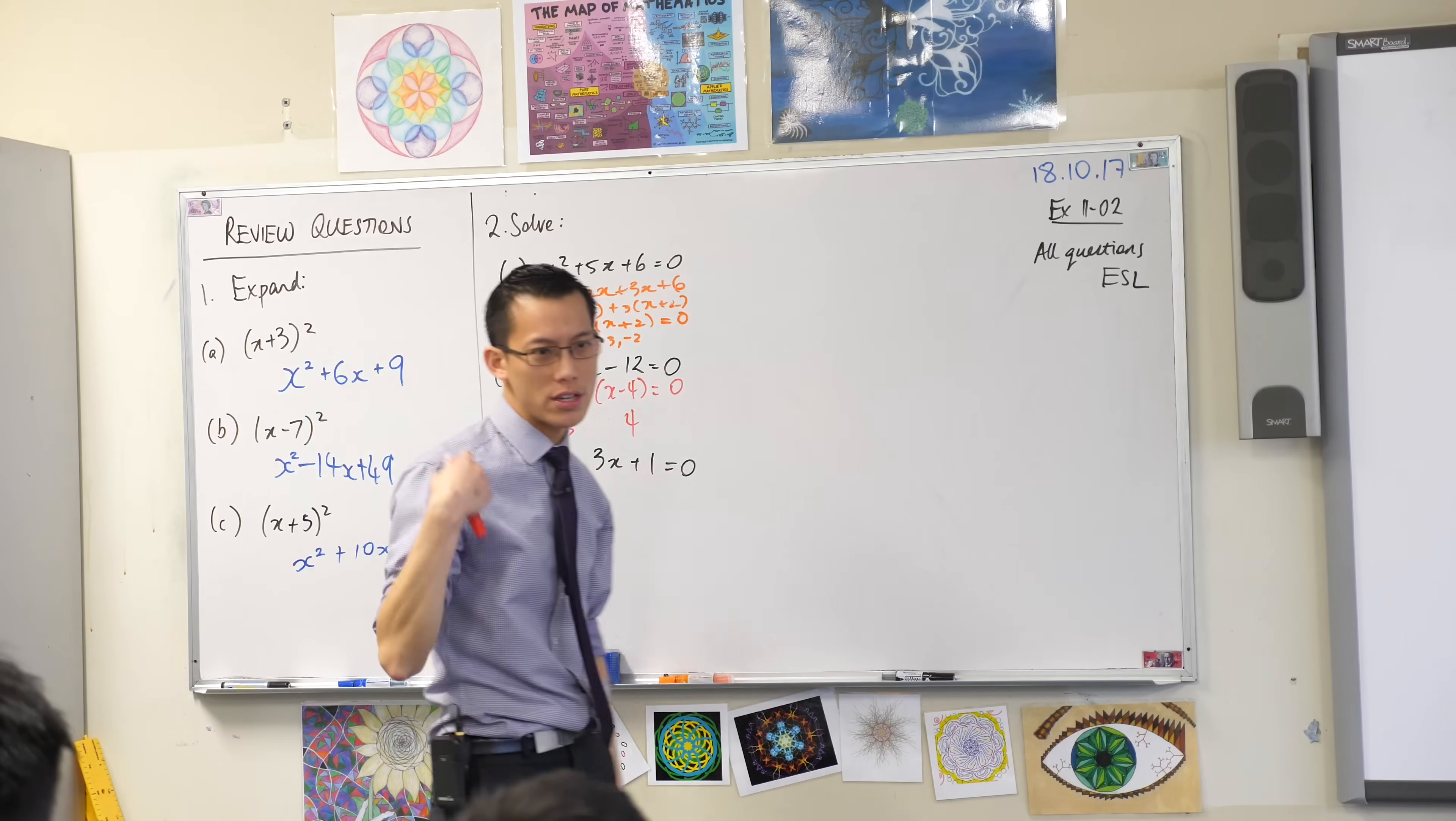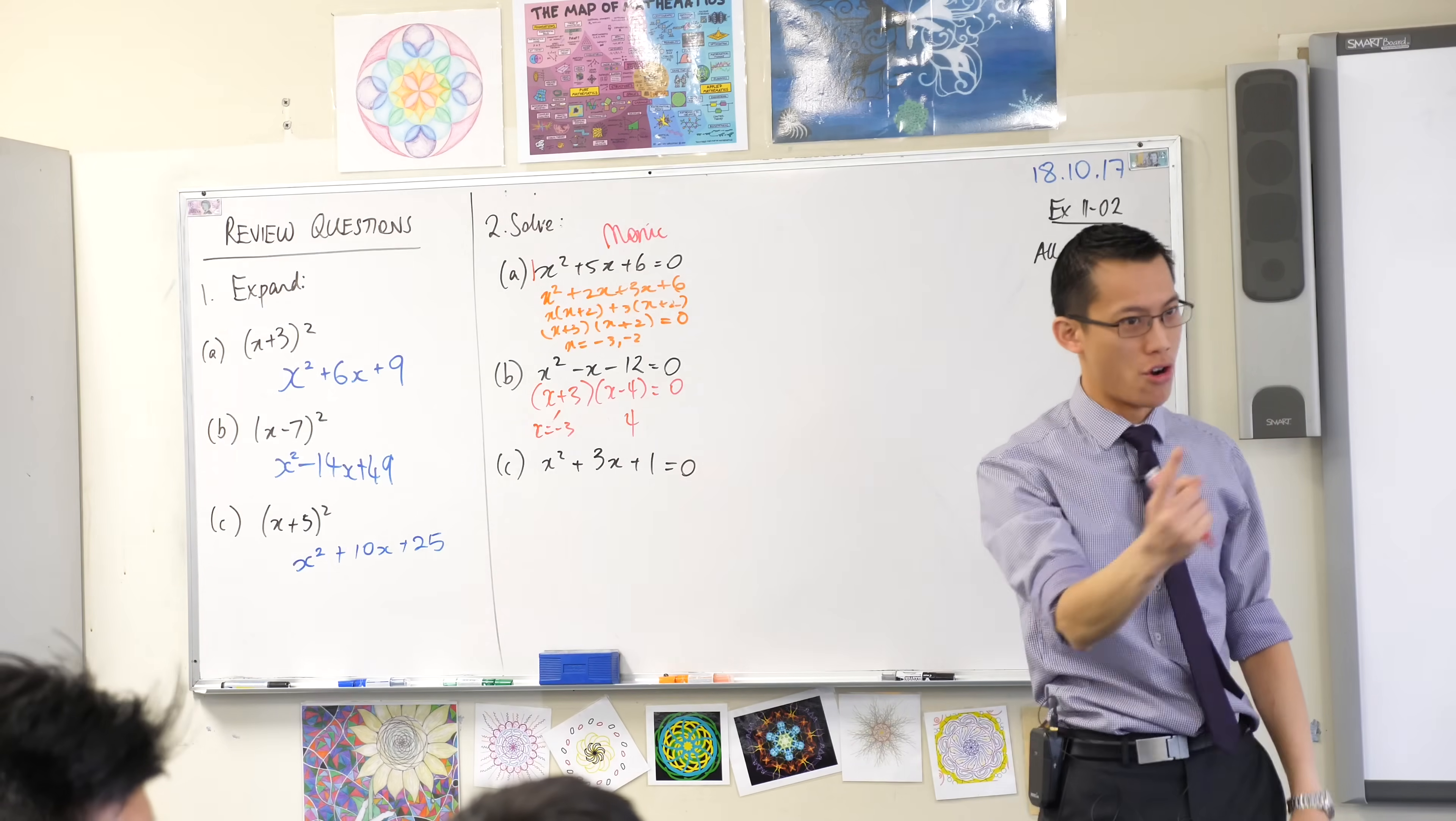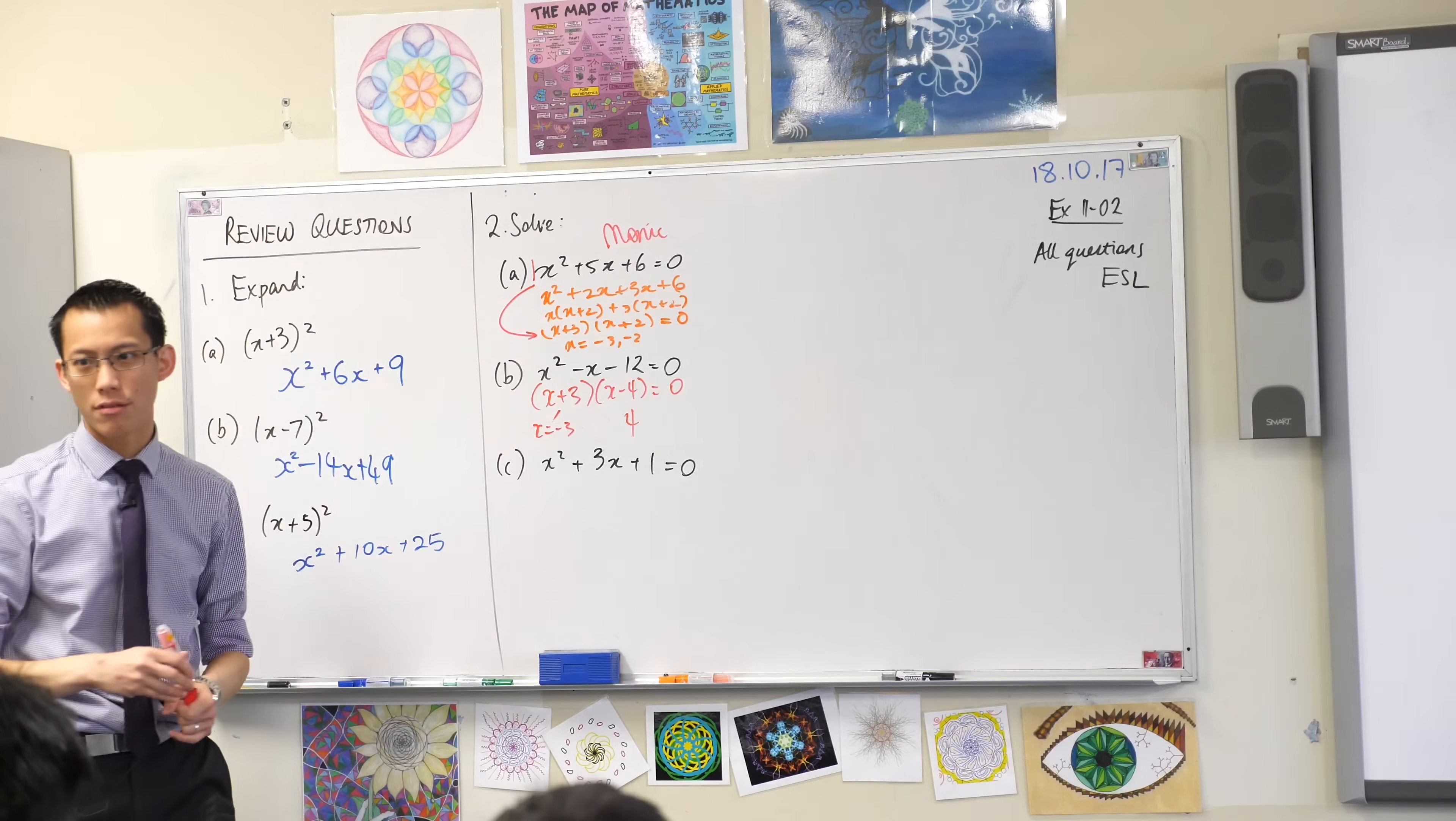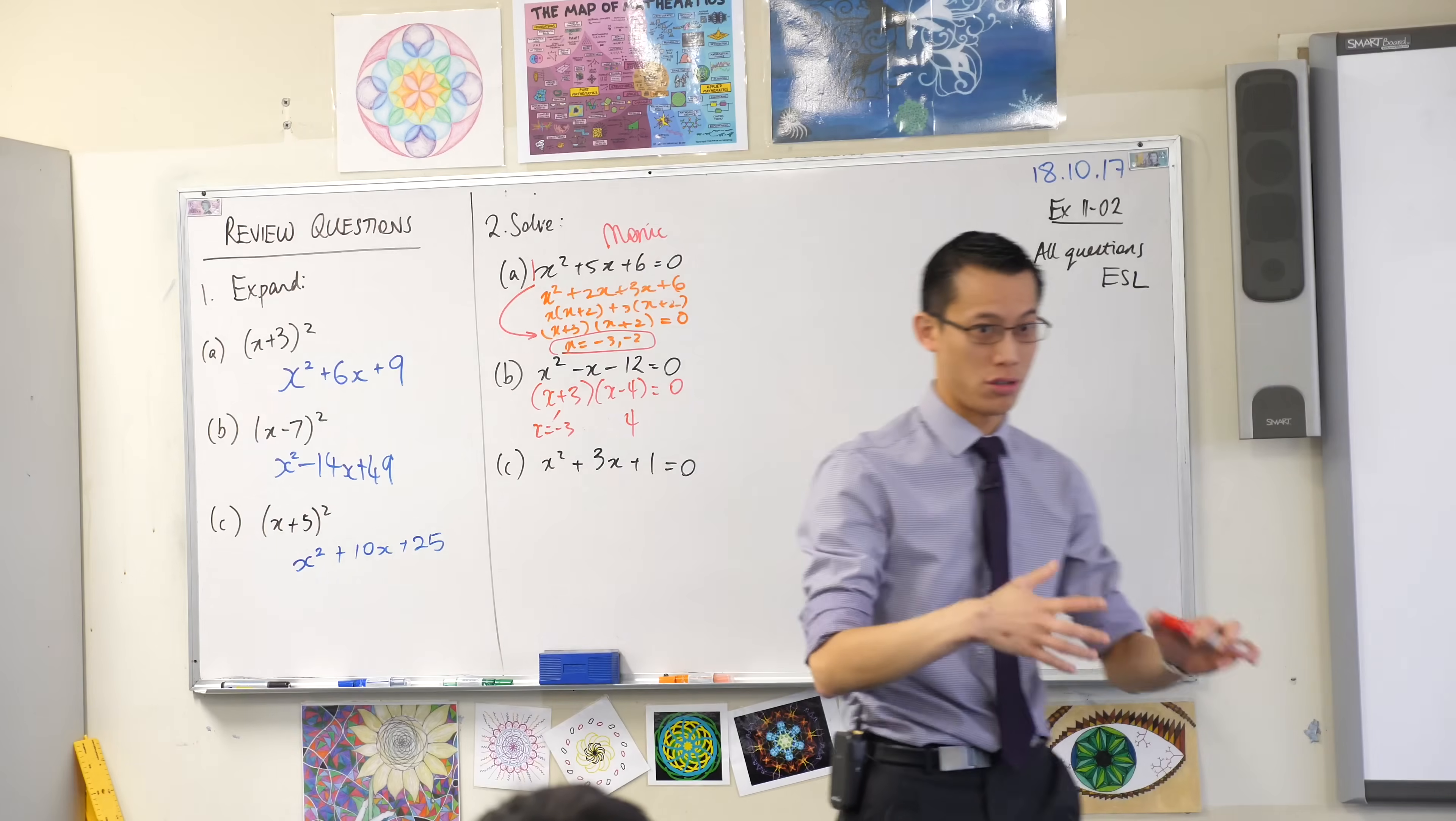I will point out, for questions where there's a number hiding in front of the x squared, what's the number? It's a 1. So, you might recall that we call these monic quadratic equations, because mono for one, like monorail. So, when it's monic and you think of that pair of numbers, 2 and 3, I'm very happy for you to immediately go to this line. You've thought of the 2 and the 3, what you can do with that is make them part of the factors that you come up with, x plus 3, x plus 2, and that's why x equals negative 3 and negative 2, those are your solutions.